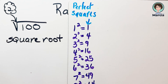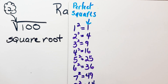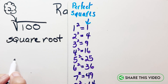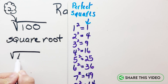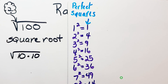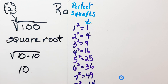As I'm looking at this, I'm going to think about twin factors. For the square root of 100, what twin factors will I multiply together to get 100? I know I can break that up into 10 times 10, and when I have that twin factor, I simplify. So the square root of 100 is equal to 10.